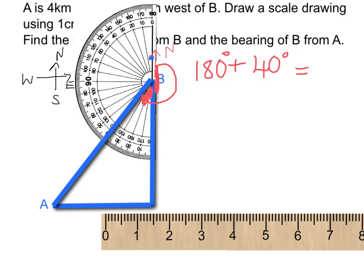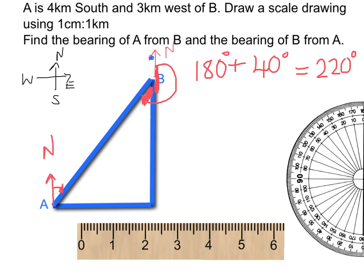So the whole bearing, all the way round from that north point to here, is 220 degrees. If I had a circular protractor, I could have measured that in one go without having to do this addition. So I've measured the bearing of A from B.